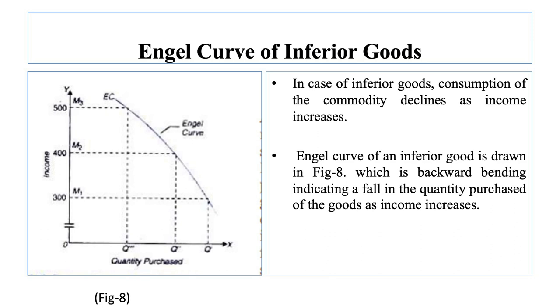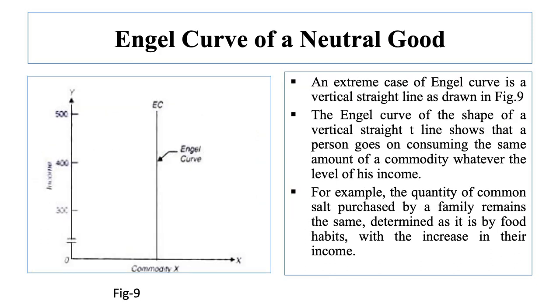Finally, the Engel curve of a neutral good. An extreme case of the Engel curve is a vertical straight line, as drawn in figure 9. This represents the case of a neutral commodity which is quite unresponsive to increases in income. The Engel curve in the shape of a vertical straight line shows that a person goes on consuming the same amount of a commodity whatever the level of his income. For example, the quantity of common salt purchased by a family remains the same, determined as it is by food habits, regardless of the increase in their income.